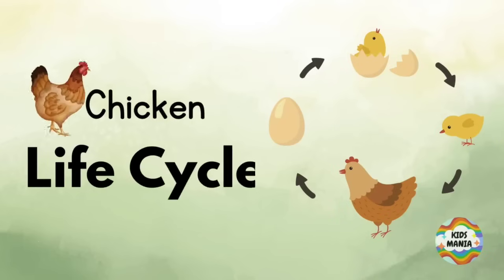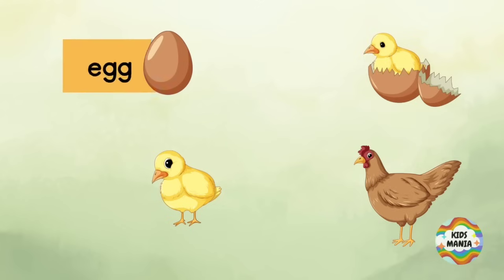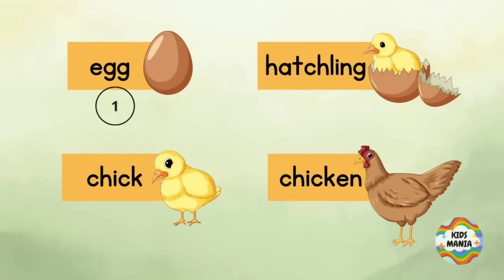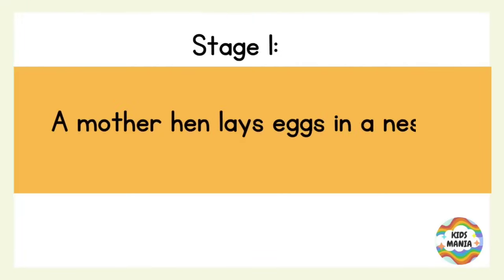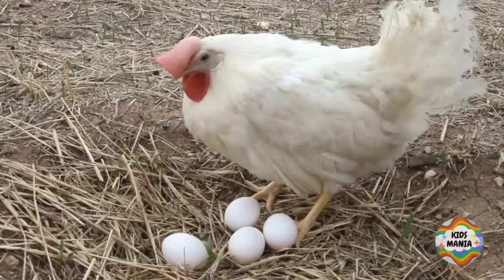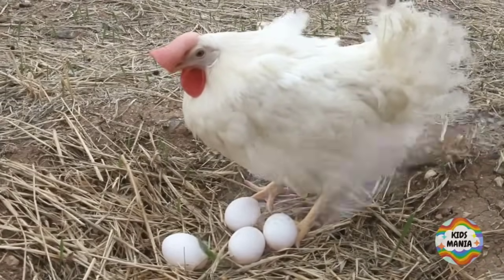Chicken life cycle. The chicken life cycle has four stages: stage one, stage two, stage three, and stage four. Now let's explore them in detail. Stage one: a mother hen lays eggs in a nest. This is the mother hen with her laid eggs.